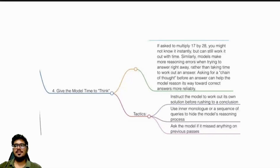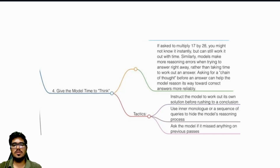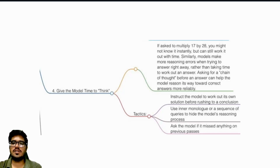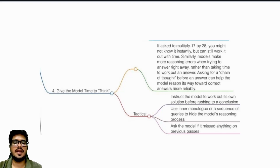Just like humans, models also require time to think. They can't reason — what they give you as an answer is something already available from their training history. So when you say 10 times 20 equals 200, even if the model gives that answer, it's not 100% certain that's correct. It's always ideal for the model to go through some reasoning before the answer is shared with the end user. Similarly, models make more reasoning errors when trying to answer right away rather than taking time to work out an answer — asking for a chain of thought before an answer can help the model reason toward correct answers more reliably.